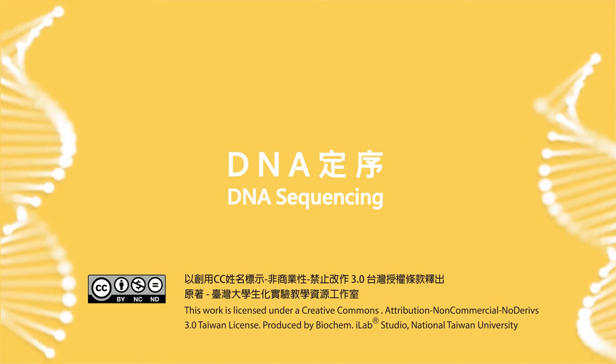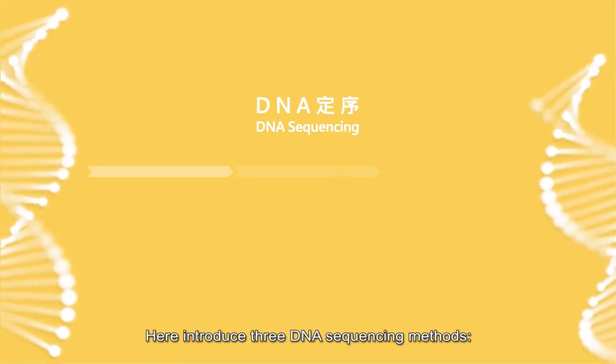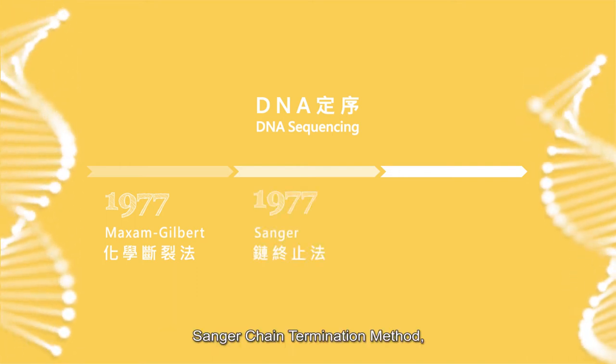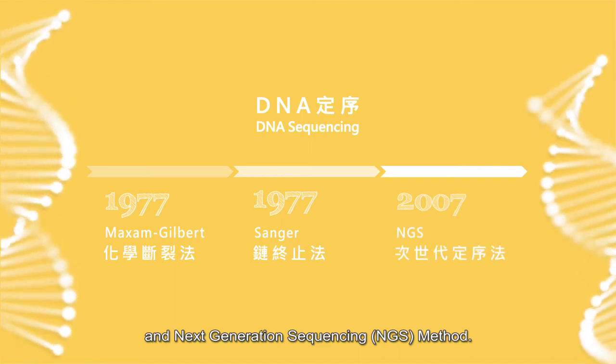DNA sequencing. Here introduce three DNA sequencing methods: Maxim-Gilbert chemical cleavage method, Sanger chain termination method, and next generation sequencing (NGS) method.